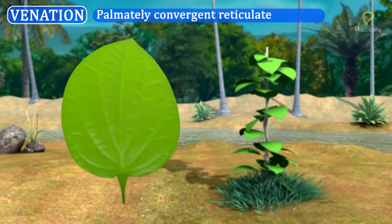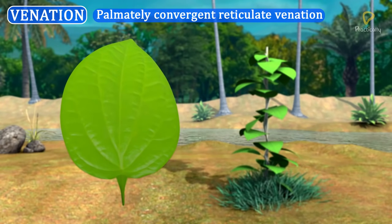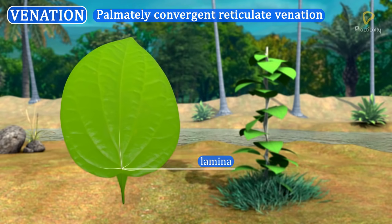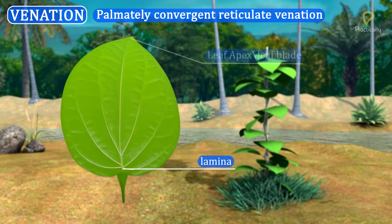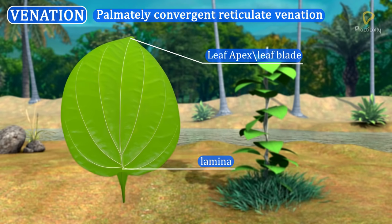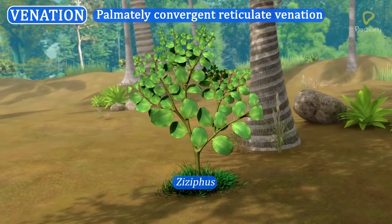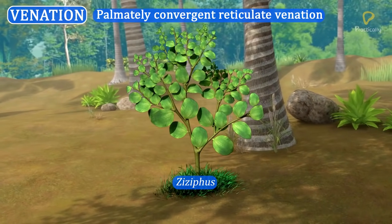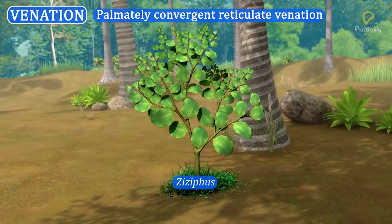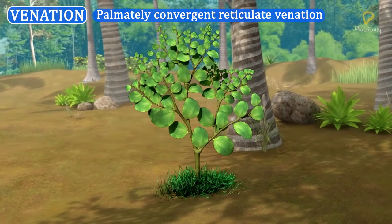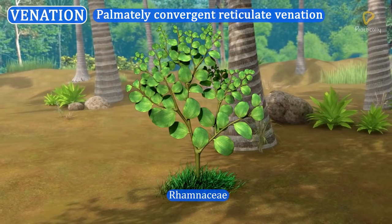Palmate convergent reticulate venation: In this venation, many mid-veins arise from the base of the lamina, spread upwards, and meet at the tip of the leaf blade. This venation is seen in Zizyphus, which is the generic name of the Indian plum and a member of the family Rhamnaceae.